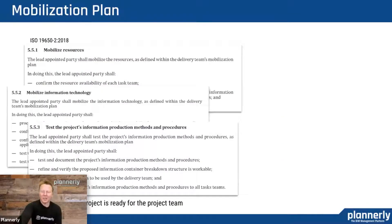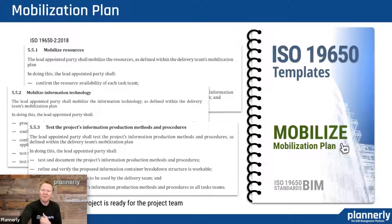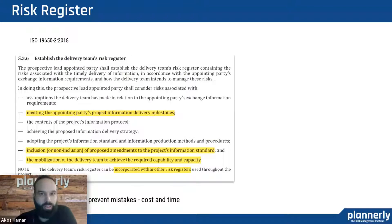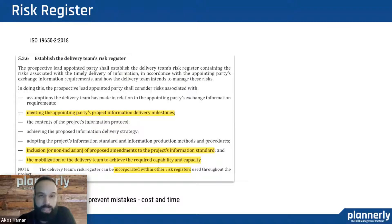When we start a project, there's a concept of testing and being able to make sure the project is essentially ready for the project team. We have checklists inside Plannerly to verify that requirements are met — checking whether the CDE is up and running and whether the workflows are good. If something can go wrong, it will. In the risk register, we can be prepared and document some of the risks we might have to encounter and set mitigation measures.